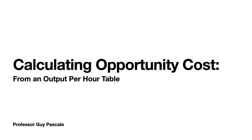Welcome to the next installment in my video lecture series in economics. In this particular video lecture, we're going to be taking a look at calculating opportunity cost from the perspective of when you're given a productivity table, or it might be labeled an output per hour table. You might be given information about how productive a person is per hour producing several items, and you will need to calculate the opportunity cost from the information given in that table.